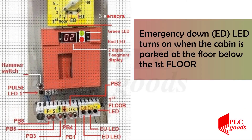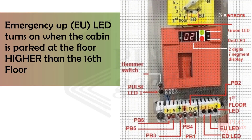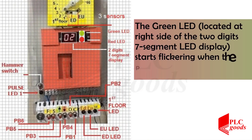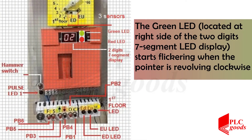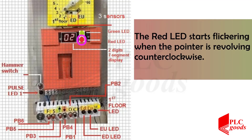The emergency down LED turns on when the cabin is parked at the floor below the first floor. The emergency up LED turns on when the cabin is parked at a floor higher than the 16th floor. The green LED located at the right side of the two-digit 7-segment display starts flickering when the pointer is revolving clockwise, and the red LED starts flickering when the pointer is revolving counterclockwise.